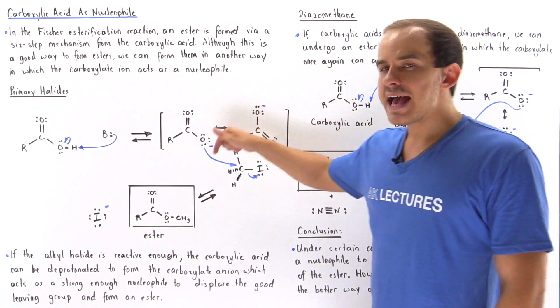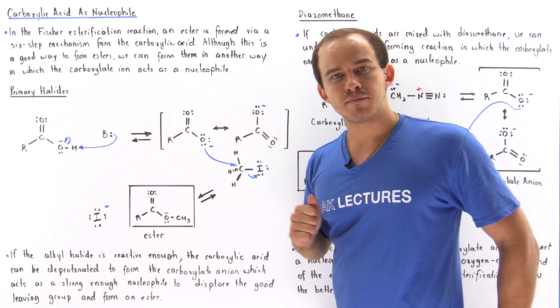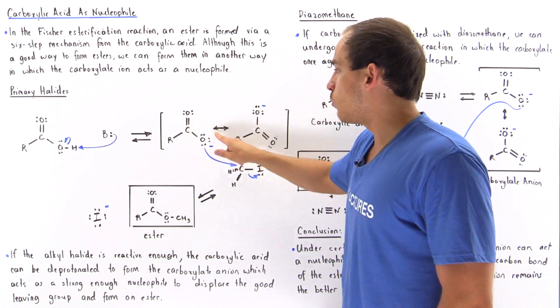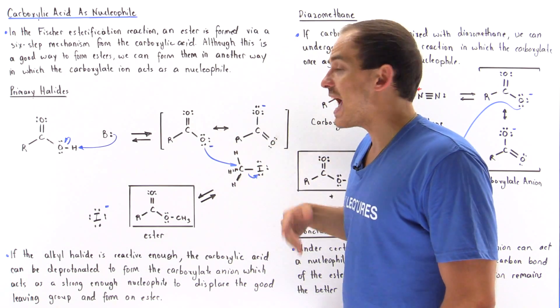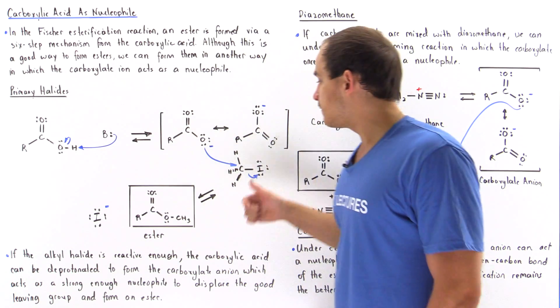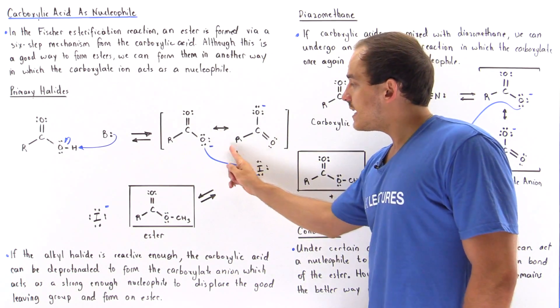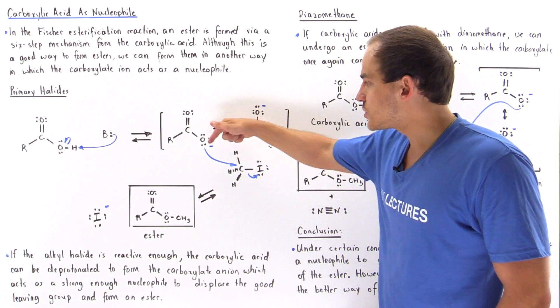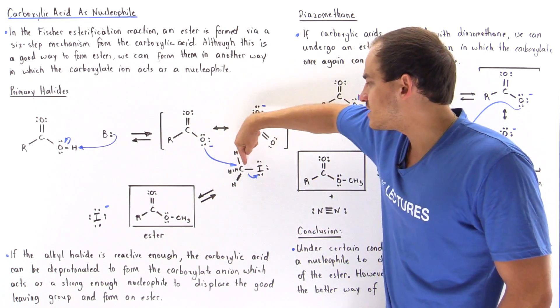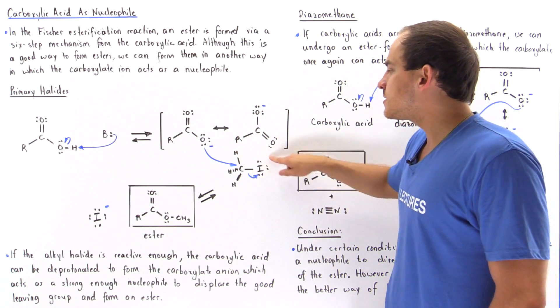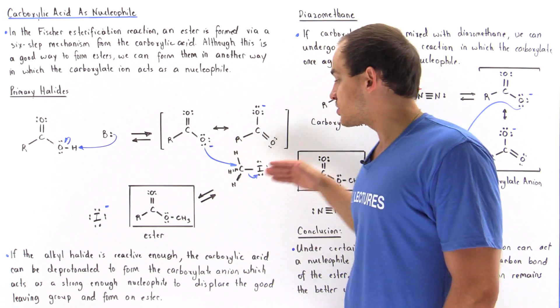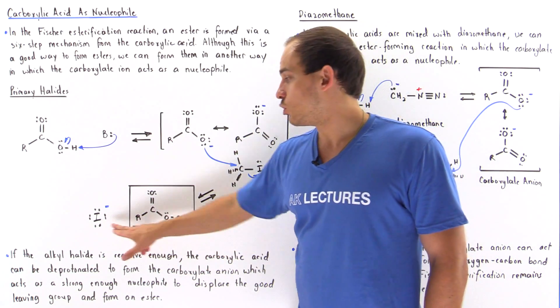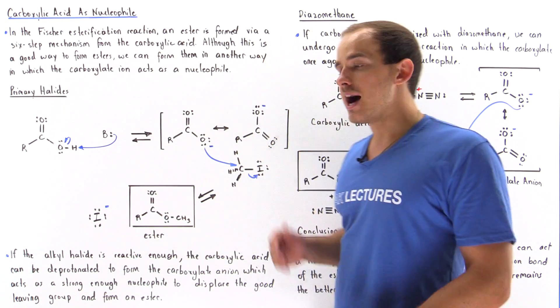Then an SN2 reaction will take place in which this carboxylate ion, more specifically this oxygen, acts as a nucleophile because there is enough space, because we only have H atoms, to form a bond at the same time displacing this good leaving group. And so we form, in an SN2 reaction, an ester molecule, as well as our iodide ion.